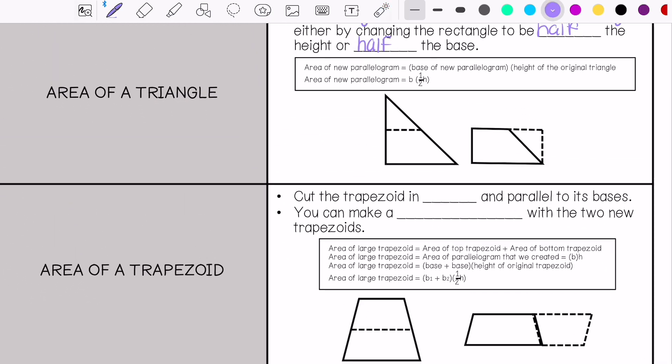For the area of a trapezoid, you cut the trapezoid in half where it's parallel to its bases, and you can make a parallelogram out of the two new trapezoids. We're going to cut it in half where that mark is parallel to the two bases.